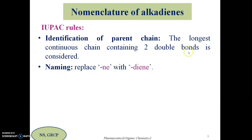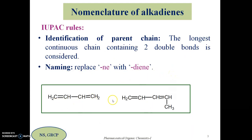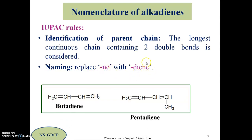After identifying the parent chain, we name it by comparing with the corresponding alkane. The suffix -ne in the alkane is replaced with -diene because it has two double bonds. For the first molecule with four carbons, the corresponding alkane is butane, so replacing -ne with -diene gives butadiene. For the five-carbon molecule, the corresponding alkane is pentane, giving pentadiene.